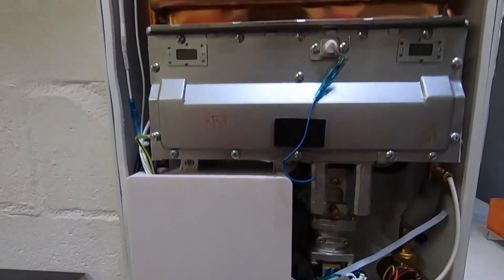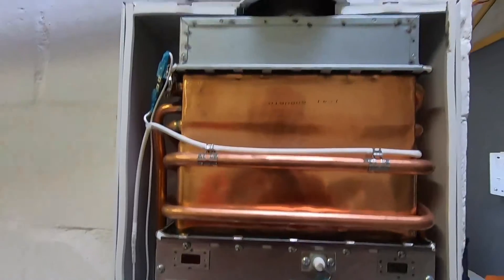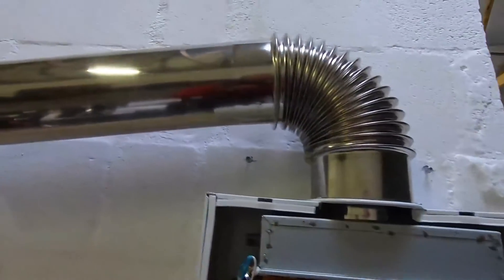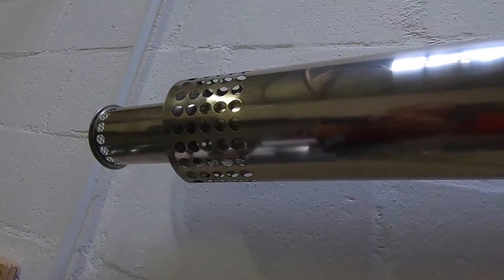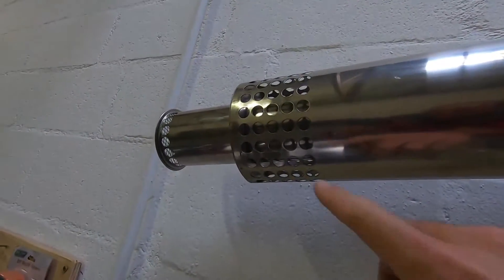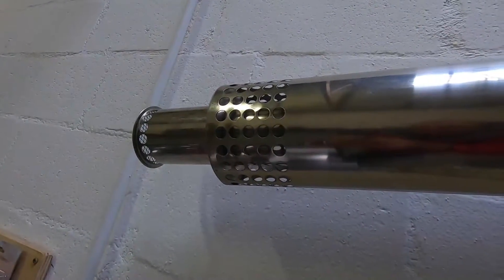This is Duart's 20 liter type C room sealed gas geyser. It is a type C because it does not use any air from the room in which it is installed, but instead draws air in through the inlet of this double concentric flue.